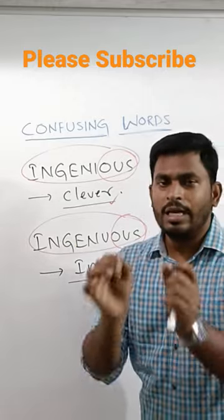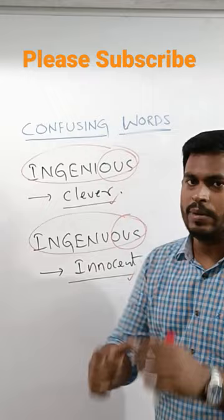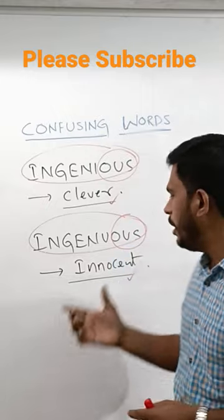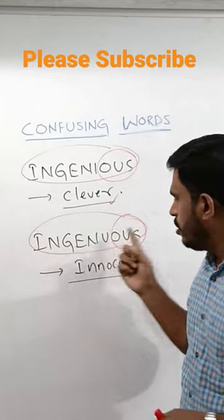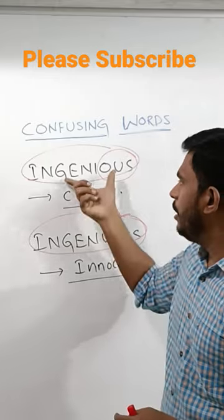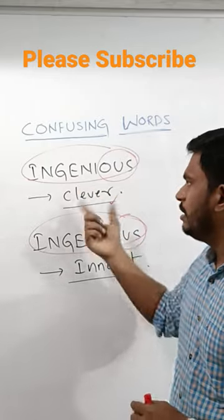If you call innocent people, it is ingenuous. So that means innocent people are ingenuous, but genius people are clever, so ingenious means clever.